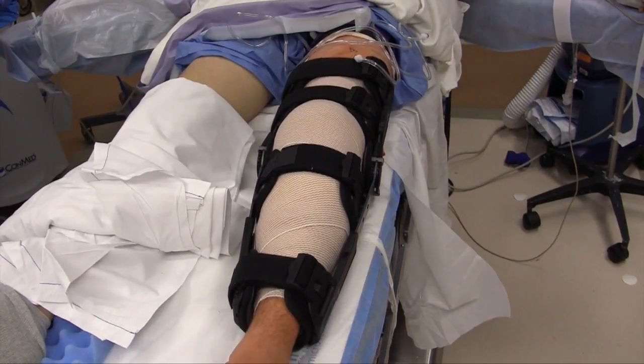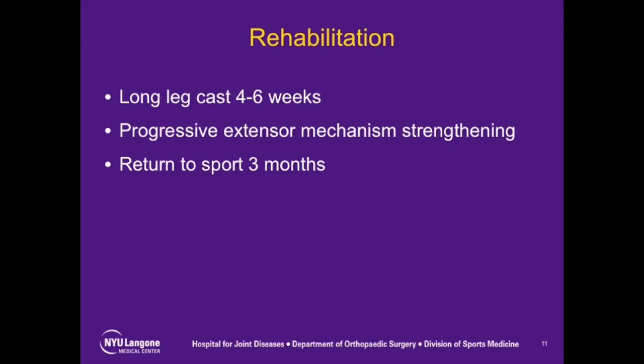Sterile dressings were then applied and the knee was placed into a hinged knee brace locked in extension. Postoperatively, the patient was kept non-weightbearing with the knee locked in extension for four weeks. At the four-week postoperative time point, he commenced formal physical therapy working on knee range of motion. At two months postoperatively, he regained full range of motion and started working on quadriceps strengthening. At the three-month postoperative time point, he was non-tender over his tibial tubercle, had five out of five quadriceps strength, and postoperative radiographs demonstrated a healed tibial tubercle. He was allowed back to training with a return to sport once his endurance had returned.